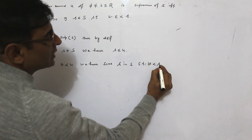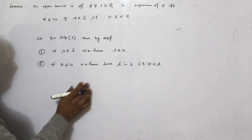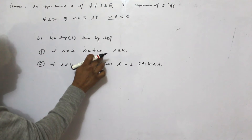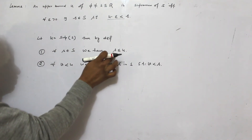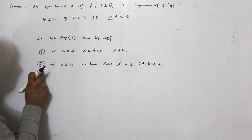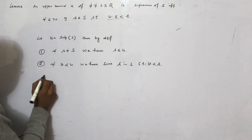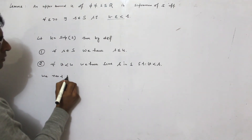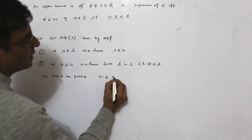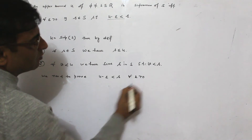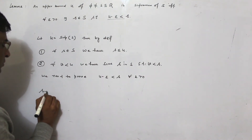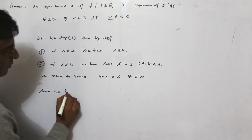Such that V is less than s. Now we have to show this part. The first part is obvious because U is supremum, so it is upper bound — always s in S will be less than U. Now the second part we need to prove: we need to prove U minus ε is less than s for all ε positive.